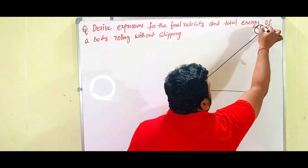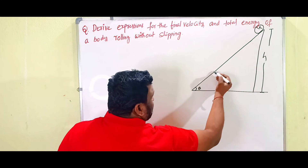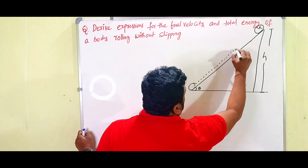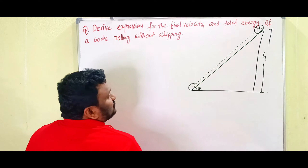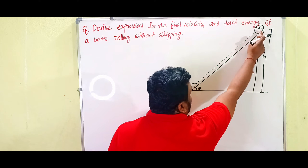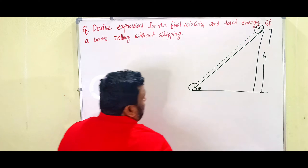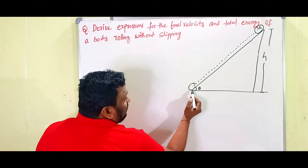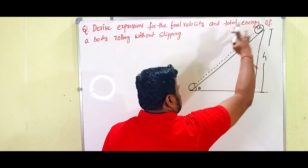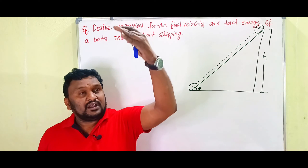The body has some radius R and is rolling along the plane, coming down like this. We are taking a body having some mass and radius R that is rolling along the inclined plane without any slipping. We have to find out the velocity on reaching the horizontal surface and the total energy of the body.